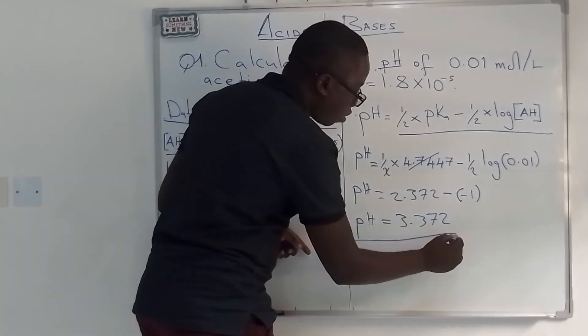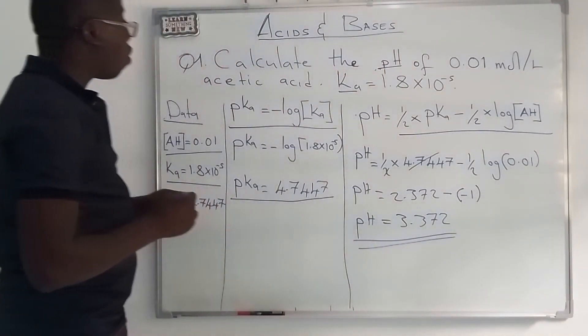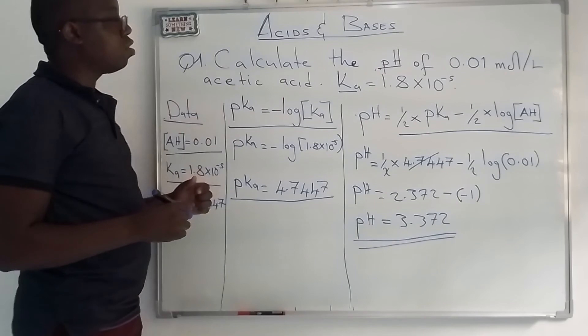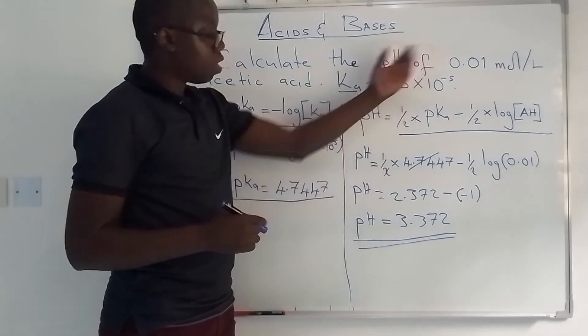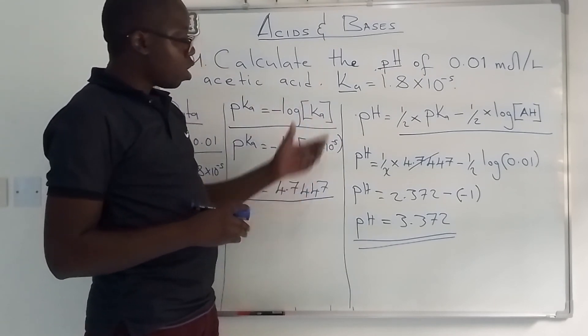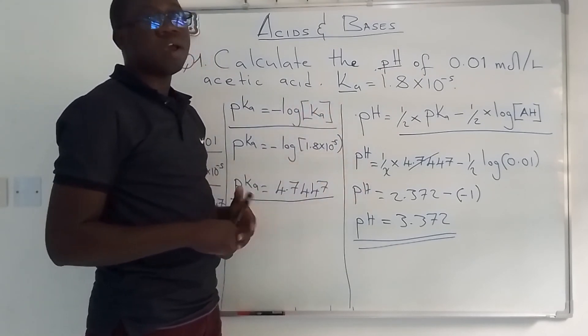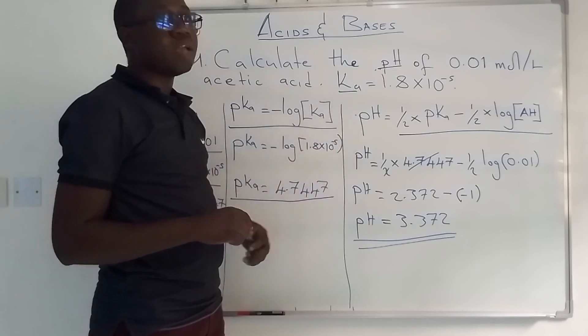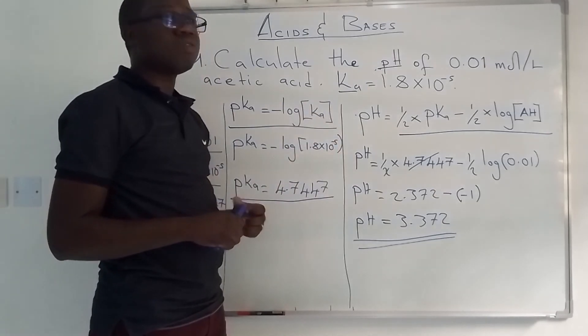So this is the pH of acetic acid when we have been given these values: 3.372. Please don't forget to subscribe to our YouTube channel if you have found this video helpful and our Facebook page, that is Zuluwa Consultants.